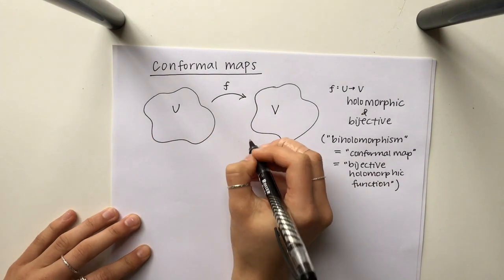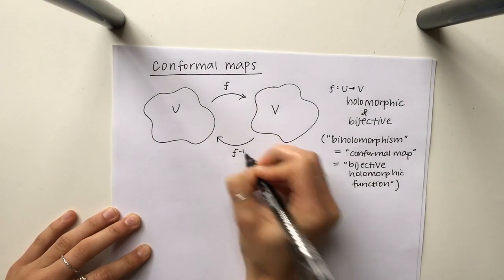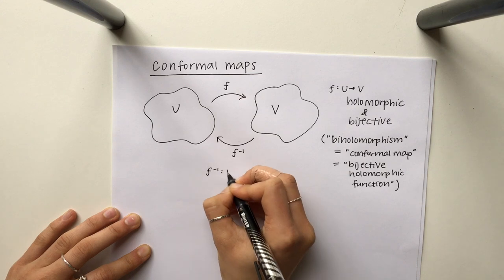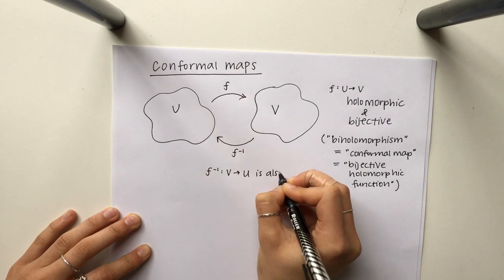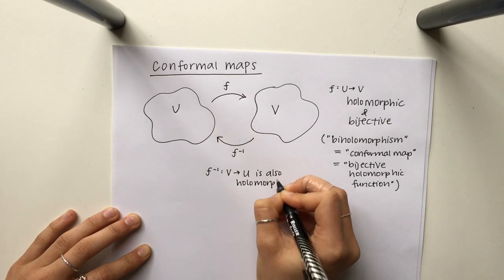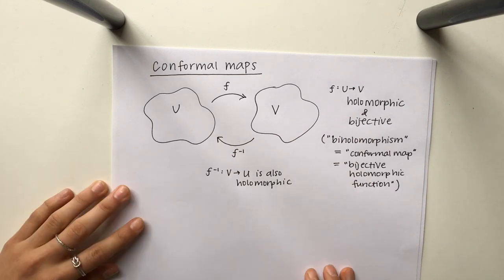And it turns out if there does exist a conformal map, then likewise there exists an inverse where the inverse goes from V to U and is also holomorphic. So that's a really cool thing about conformal maps.